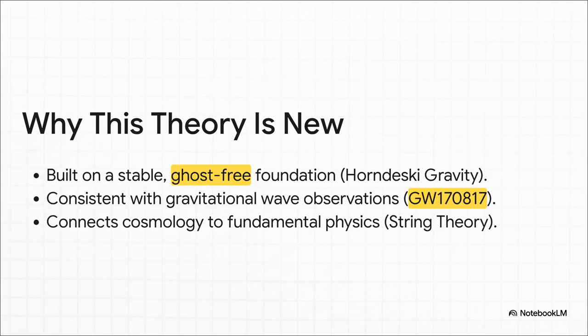Now, what makes this theory so compelling is that it isn't just some wild guess. It's built on a stable mathematical foundation that avoids all sorts of paradoxes, what physicists call being ghost-free. And most importantly, it clears a huge hurdle that completely killed previous theories like this. A few years ago, we observed gravitational waves that proved gravity and light travel at the exact same speed. At least, they do today. This new theory perfectly allows for that while still letting their speeds be totally different in the distant past. It's a massive deal.